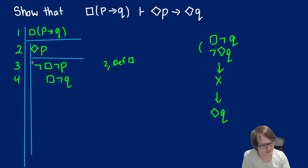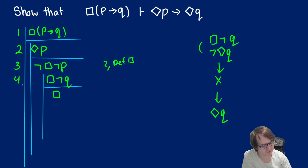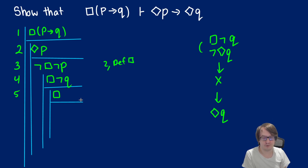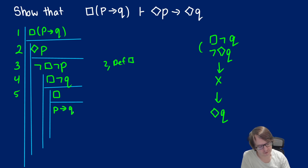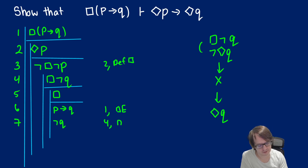Let's set that up as another sub-proof. We have boxes we can work with in lines one and four, so we introduce a new box sub-proof in line five to get into that world. Now that we're inside the box, we can pull things from outside into it. From line one, box(p → q), we pull p → q in — this is box elimination. From line four, box not Q, we pull not Q in — another case of box elimination.